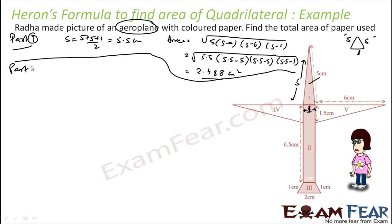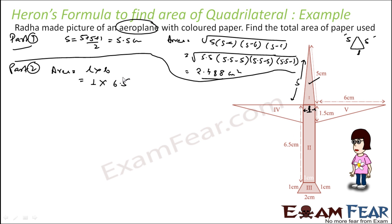Now we will find the area of part 2. Part 2 is a rectangle of length 6.5 and breadth 1. So the area of part 2 will be length into breadth: 6.5 into 1, giving us 6.5 centimeter square.